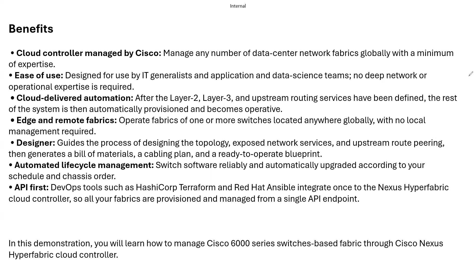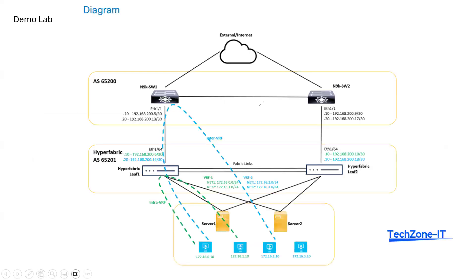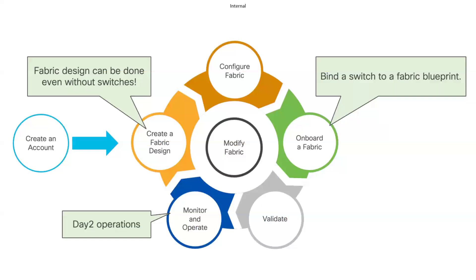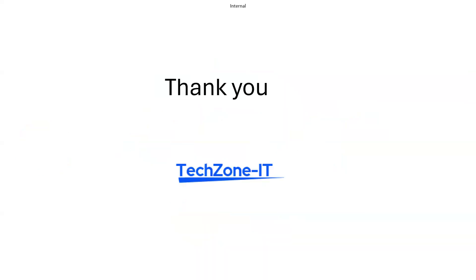Looking at the lab topology, we have Nexus 9000 series switches as spine, and Nexus 9300 6000 series HyperFabric switches as leaf switches, with servers and hosts connected to them. In the lab demonstration we will configure those HyperFabric switches, onboard them into Nexus HyperFabric, operate the leaf-and-spine architecture, do the routing, and configure IP addresses. This covers the full HyperFabric onboarding and device lifecycle.